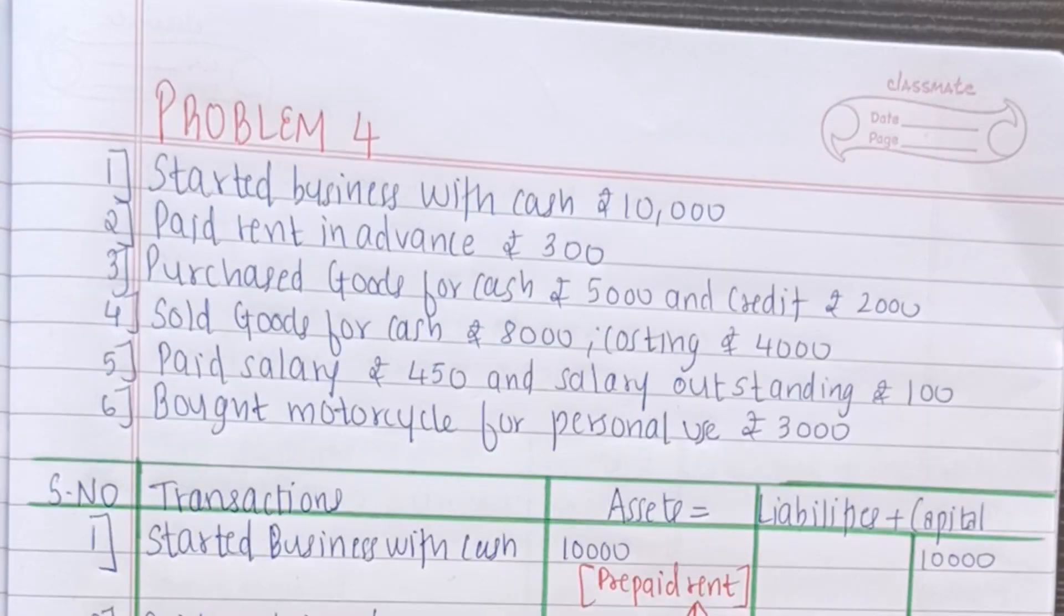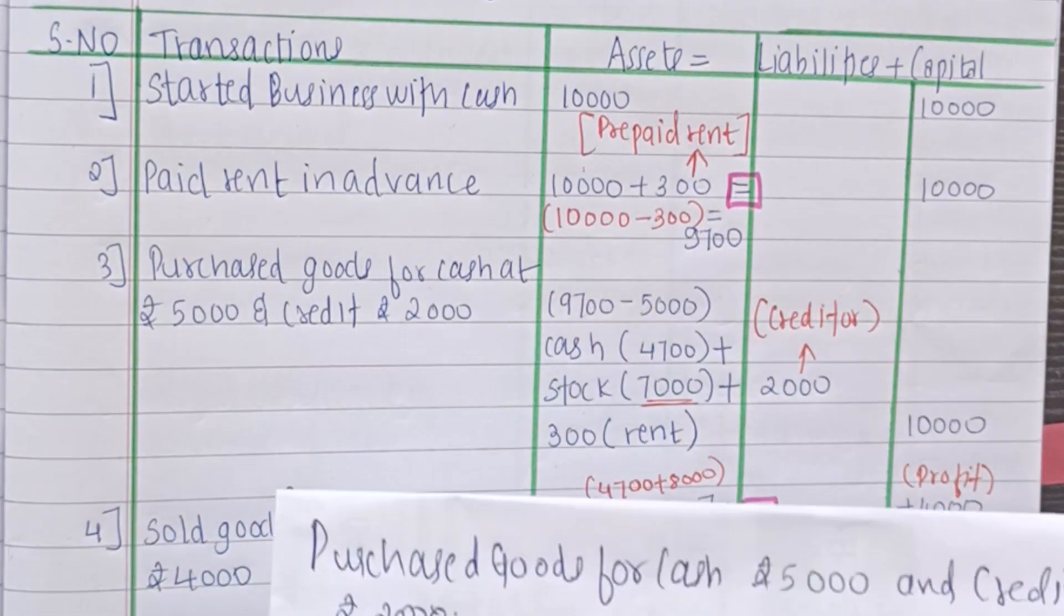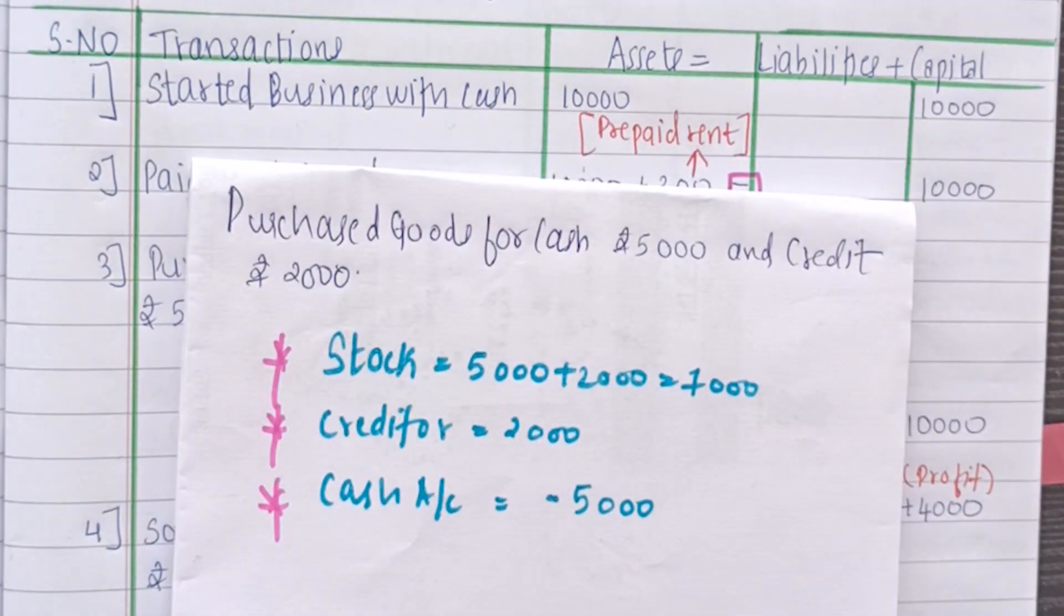Moving on to the fourth transaction. It says purchase goods for cash 5000 and on credit Rs.2000. So here I have given a simple explanation to this. We have goods purchased for cash 5000 and credit 2000. So first of all the total amount of stock that we have is 5 plus 2 that is 7000. Irrespective of whether it was purchased on credit or cash.